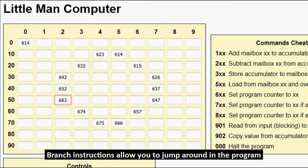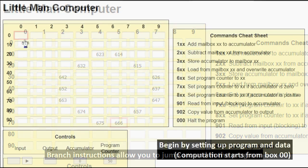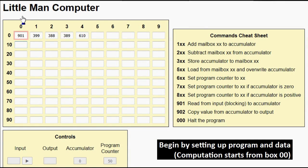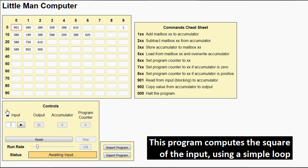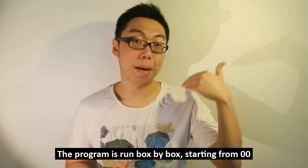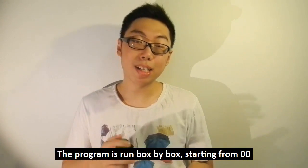But how does this experiment actually perform computation? All you have to do at the beginning is set up your state — that involves writing the program and defining the data. Then the program counter is initialized to zero, and from this point onwards the little man inside the computer is going to look at the program counter, go to the mailbox it refers to, read the value there, and perform computation on it as if it were an instruction. When each computational step is done, the program counter is incremented by one.